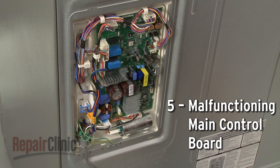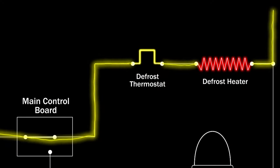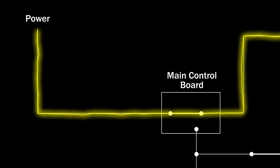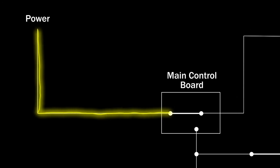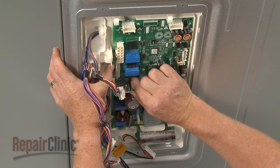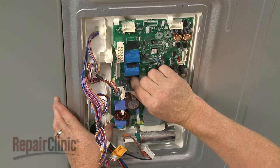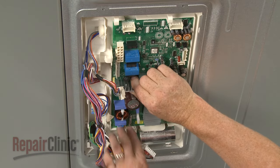Since the refrigerator's main control board regulates the power supply to all of the appliance's components, a malfunctioning board may prevent voltage from being sent to the defrost system. Before replacing a main control board, you should rule out the other probable causes.